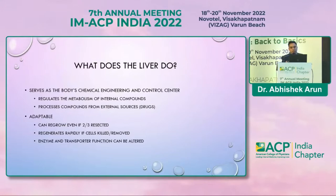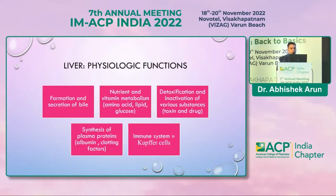The liver serves as the body's chemical engineer and control center, regulating various metabolisms of internal compounds and also processing compounds from external sources like drugs. It is very adaptable and can regrow even if two-thirds is resected. Enzyme and transporter functions can be altered with the help of liver function. Physiological functions include formation and secretion of bile, nutrient and vitamin metabolism, detoxification and activation of various substances, synthesis of plasma proteins, and helping in the immune system via Kupffer cells.